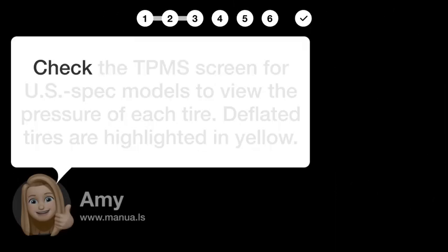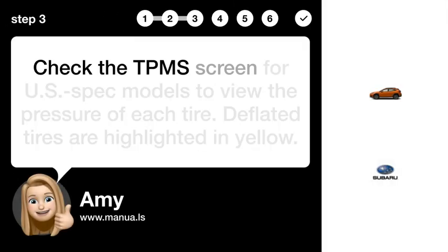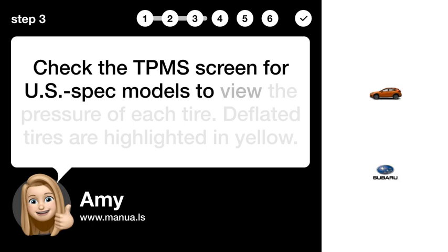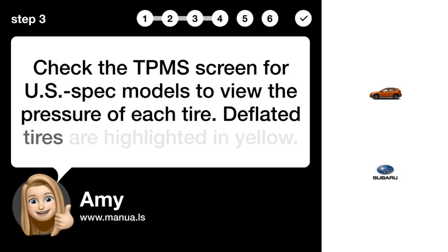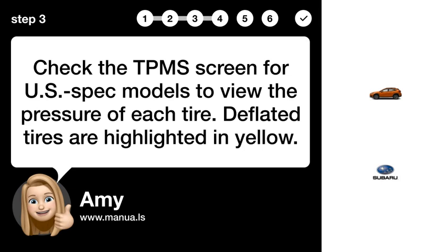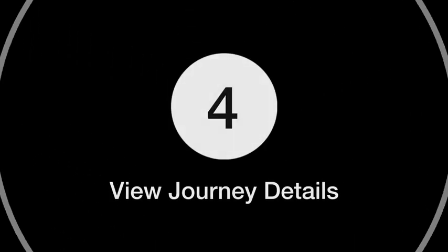Step 3: Check Tire Pressure. Check the TPMS screen on S-Spec models to view the pressure of each tire. Deflated tires are highlighted in yellow.